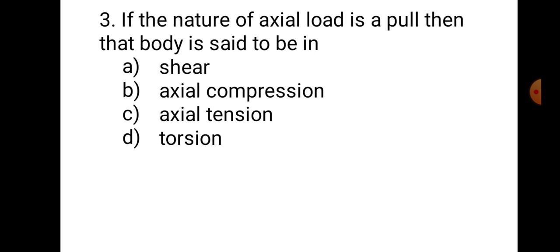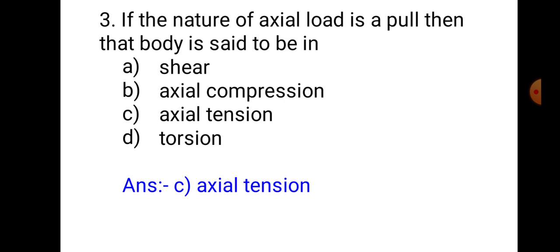Question number 3: If the nature of axial load is a pull, then the body is said to be — A. Shear, B. Axial compression, C. Axial tension, D. Torsion. In this question, the load is axial and of pulling nature, meaning it will try to elongate the body, and such a body is said to be in axial tension. Hence, the correct answer is C. Axial tension.